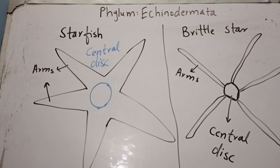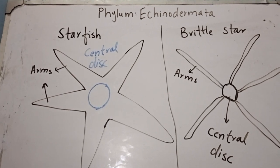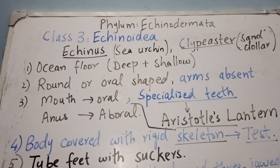Comparing the two classes visually: in the starfish the central disc blends into the arms, while in the brittle star the central disc is very clearly distinct, with five long whip-like or snake-like arms.